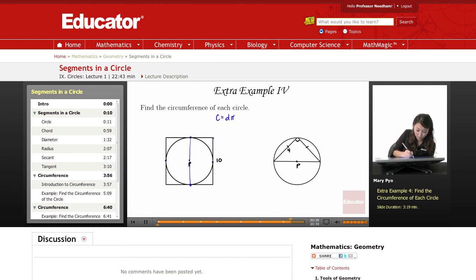This is 10, so then this diameter would also be 10. So the circumference is going to be 10 times 3.14, which means it's going to be 31.4.